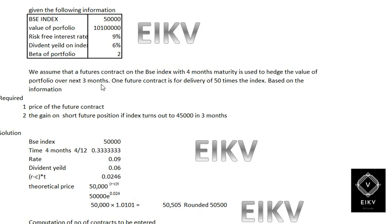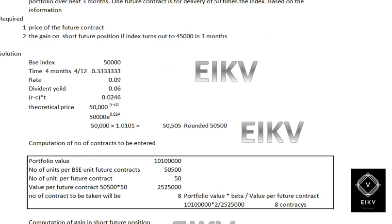We assumed that a futures contract on the BSE index with four-month maturity is used to hedge the value of the portfolio over the next three months. One futures contract delivery would be 50 times the index. Based on the following information, you are required to find: number one, the price of the futures contract; number two, the gain or loss of the position if the index turns out to be 45,000 in three months.